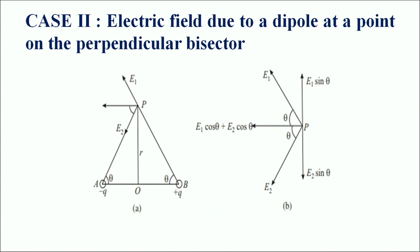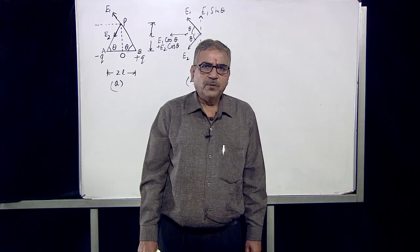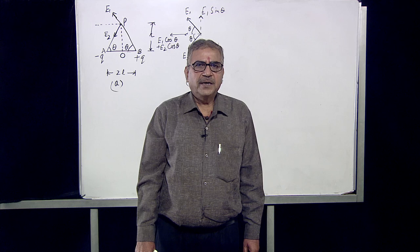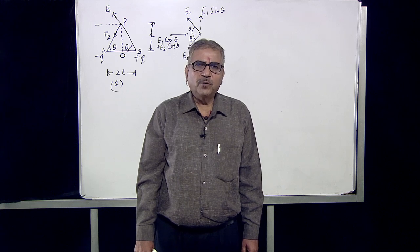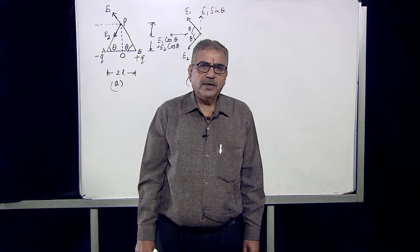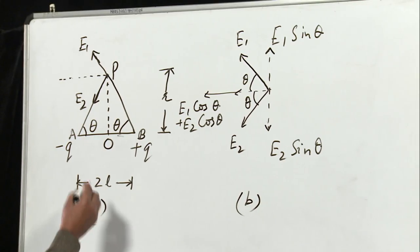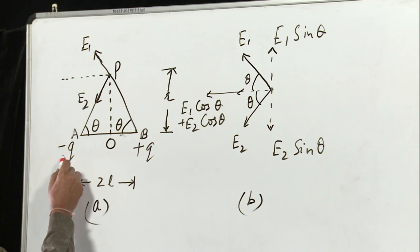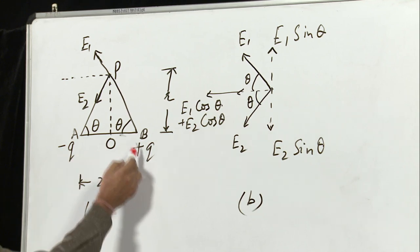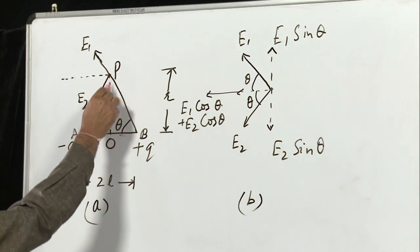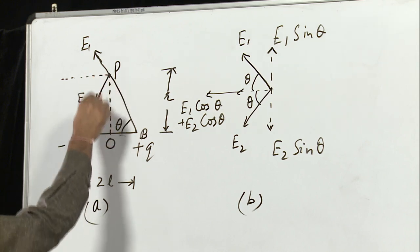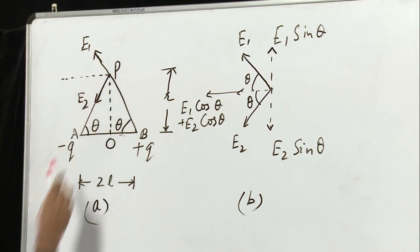Now let us calculate the electric field in the second case when the point P lies on the equatorial line of the dipole. Here we have a dipole AB — charge minus Q is here, charge plus Q is here, and point P is on its equatorial line, meaning on its perpendicular bisector.